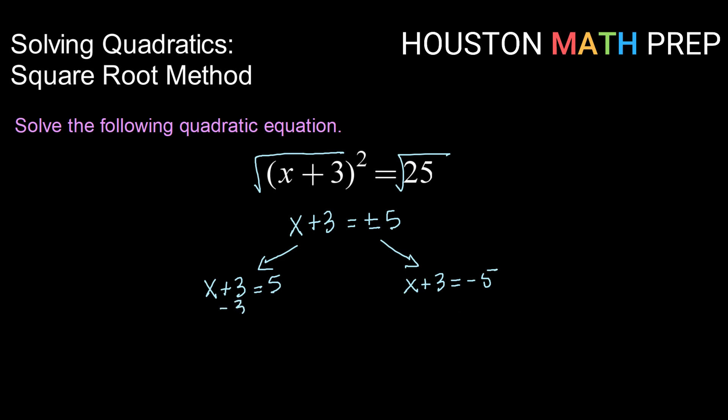Now I can subtract 3 from both sides to get x by itself. So one of my solutions is x equals 2. Doing the same thing to my second equation, my second solution is x equals negative 8.